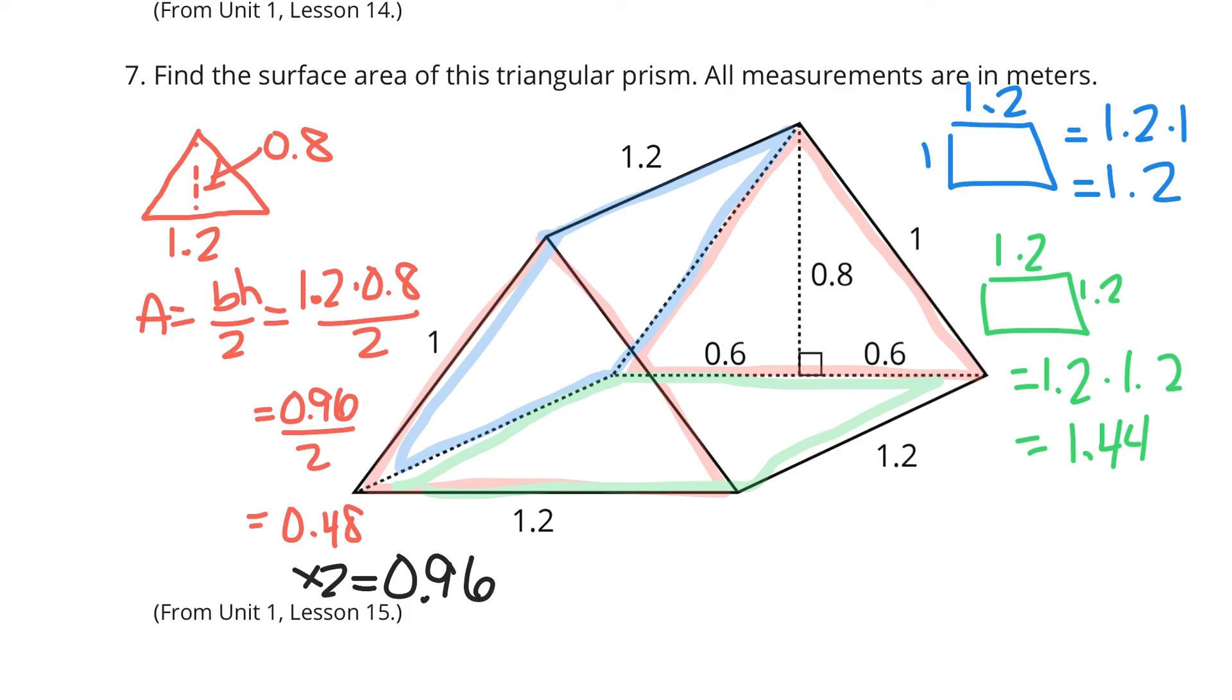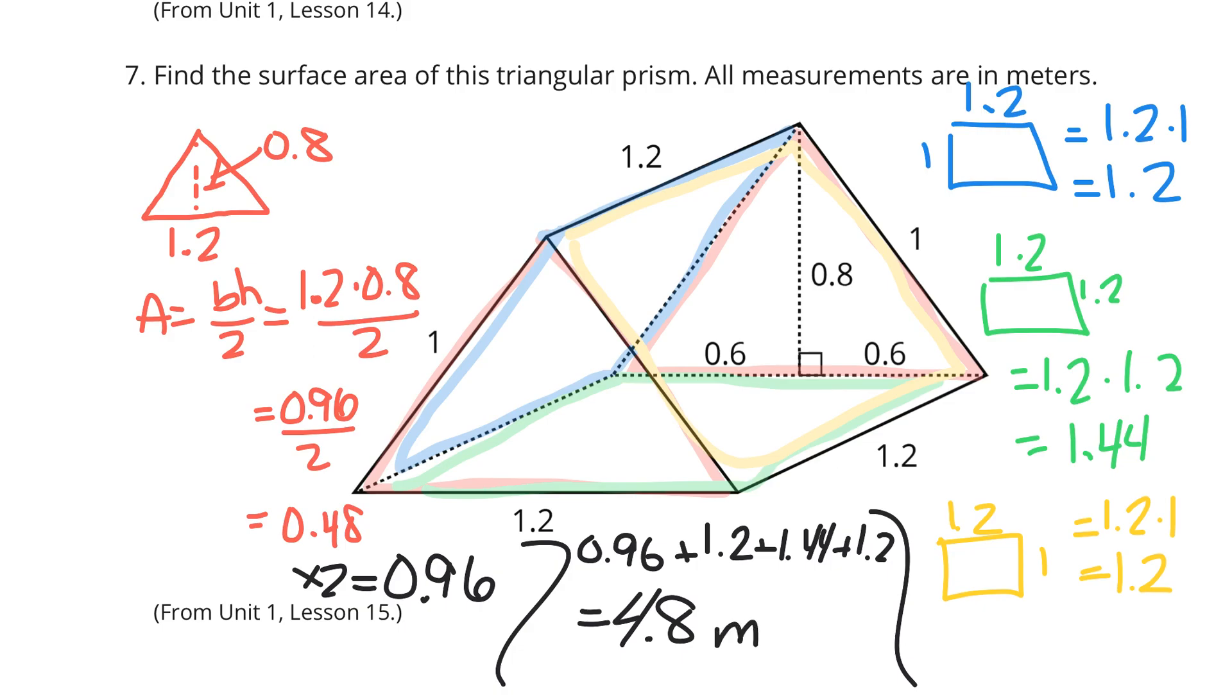Which leaves me now with just one last side. And now that we've colored in all these sides, it kind of gets a little bit confusing, maybe. But, this rectangle is going to be another 1 and 2 tenths by 1. So, 1 and 2 tenths times 1 is 1 and 2 tenths. And now, if we take all of these, we can finish our question. We'll have 96 hundredths plus 1 and 2 tenths plus 1 and 44 hundredths plus 1 and 2 tenths, to be our total surface area here, 4 and 8 tenths square meters.